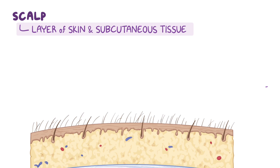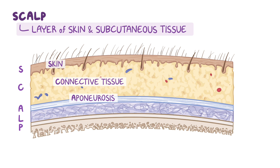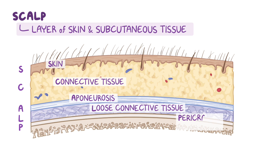The scalp is made of five layers, which can be remembered easily as the first letter of each spells out the word SCALP. Going from superficial to deep: S stands for skin, C stands for connective tissue, A stands for aponeurosis or epicranial aponeurosis, L stands for loose connective tissue, and P stands for pericranium, which is the periosteum on the external surface of the cranium. The first three layers — skin, connective tissue, and the aponeurosis — are connected tightly together, forming a single unit called the scalp proper.